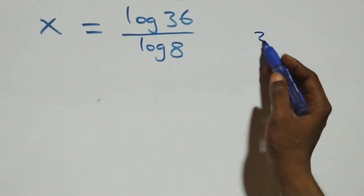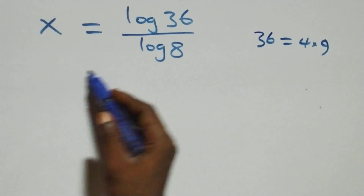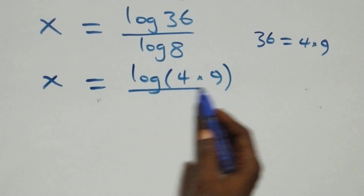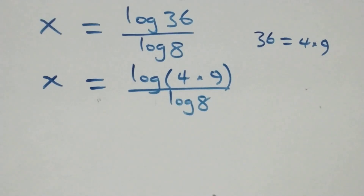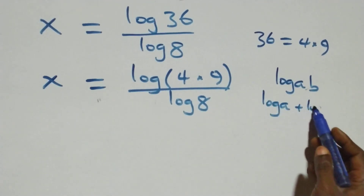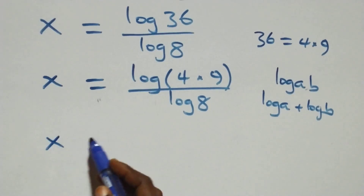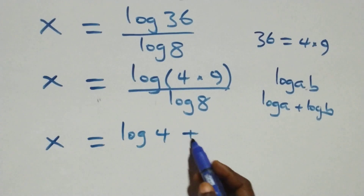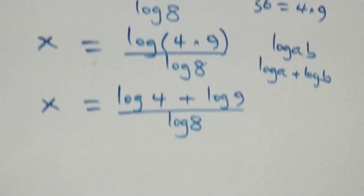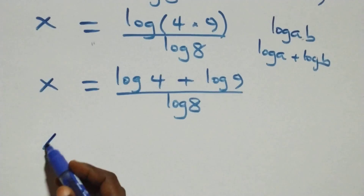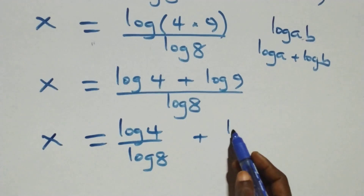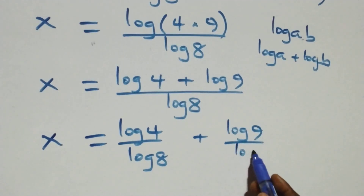Next step, we can express 36 as 4 times 9, which gives x equals log(4 times 9) over log 8. Using the log rule where log(a times b) equals log a plus log b, we have x equals (log 4 plus log 9) over log 8. Separating into two fractions: x equals log 4 over log 8 plus log 9 over log 8.